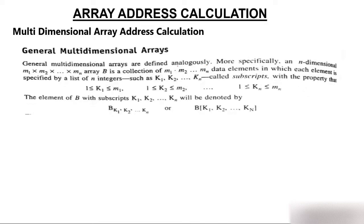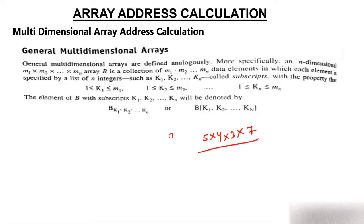This concept and diagram is taken from Tata McGraw-Hill, which is one of the standard books. A 2-dimensional array is a 5×4 matrix. A 3-dimensional array would be 5×4×3, and a 4-dimensional array would be 5×4×7. More specifically, an N-dimensional array with dimensions M1, M2, ..., Mn is a collection of M1×M2×...×Mn data elements.